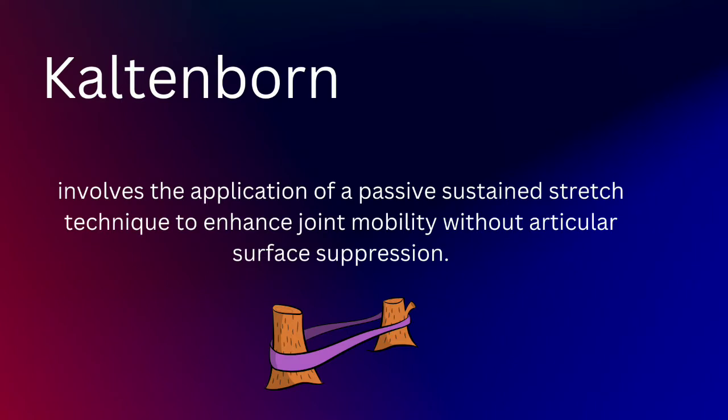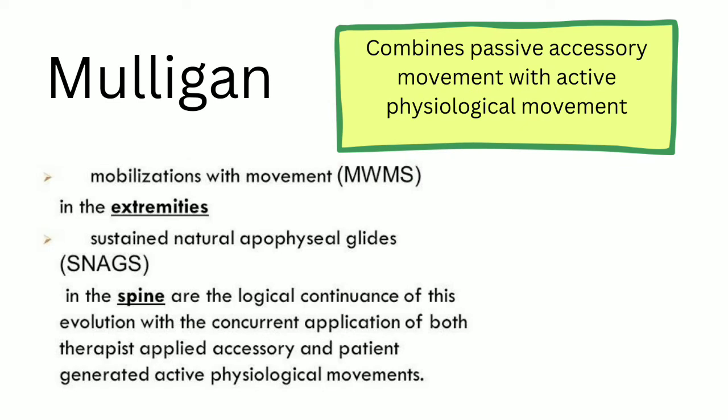While Maitland uses passive oscillations, Kaltenborn uses a passive sustained stretch technique to enhance joint mobility without articular surface compression. Mulligan combines passive accessory movement with active physiological movements, making use of mobilizations with movement in the extremities and sustained natural apophyseal glides in the spine.